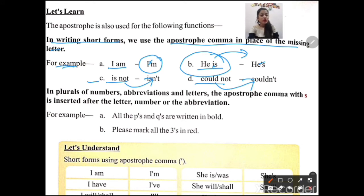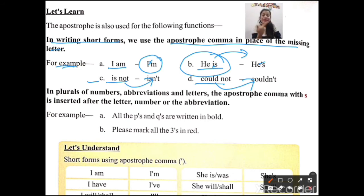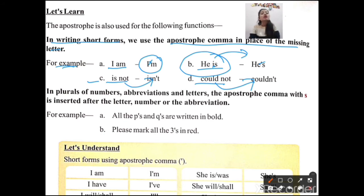Similarly: 'is not' becomes 'isn't' and 'could not' becomes 'couldn't'. Next point: when plural numbers or letters appear in a text — meaning one number or letter appears more than once — we use apostrophe 's' after that number or letter to show the plural form.